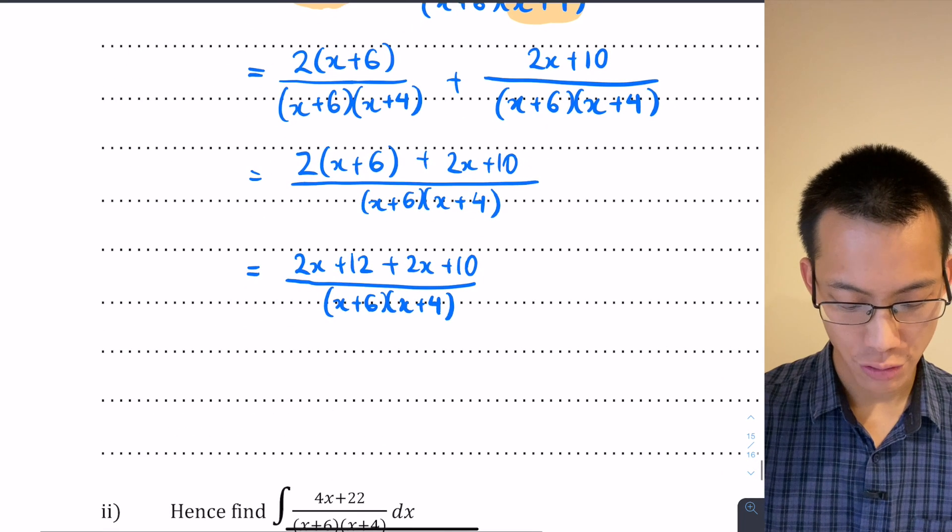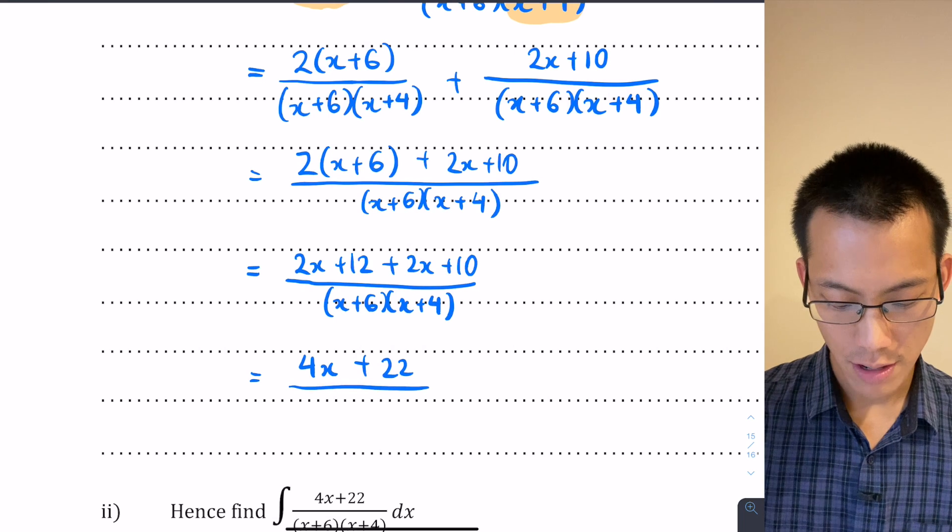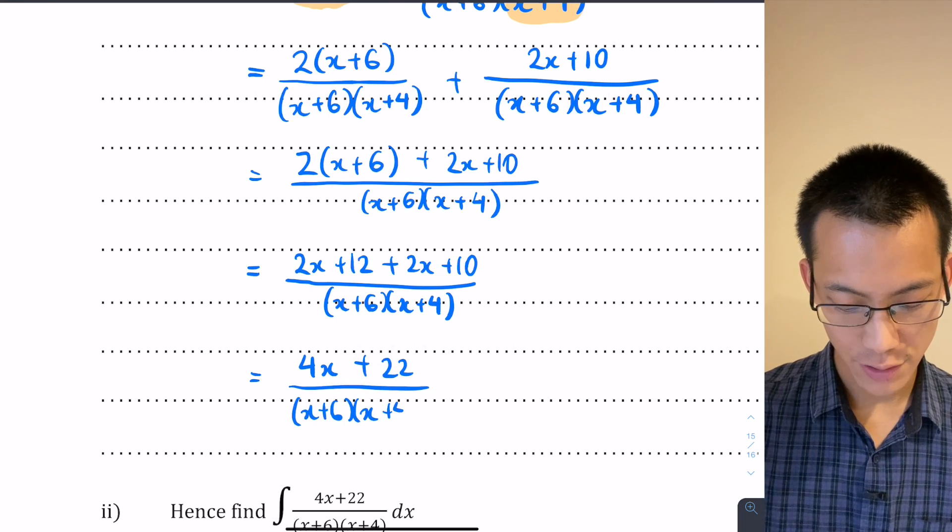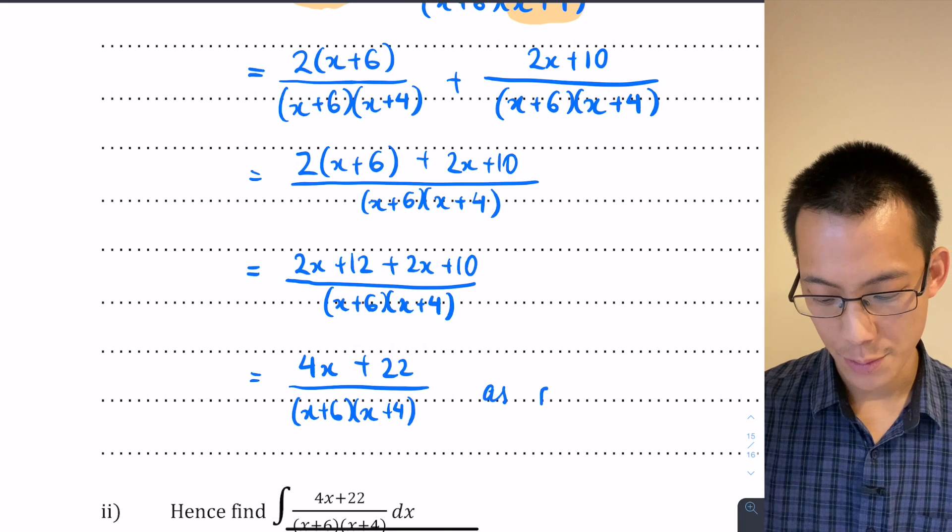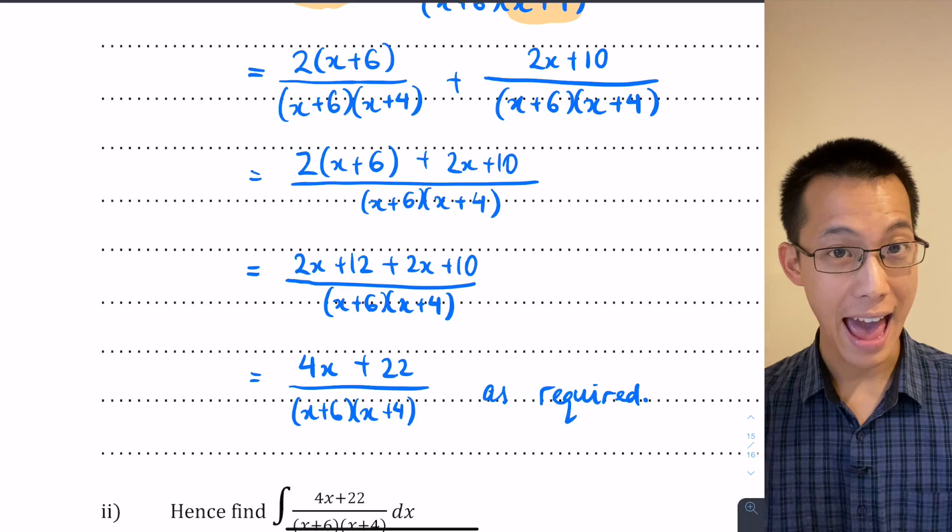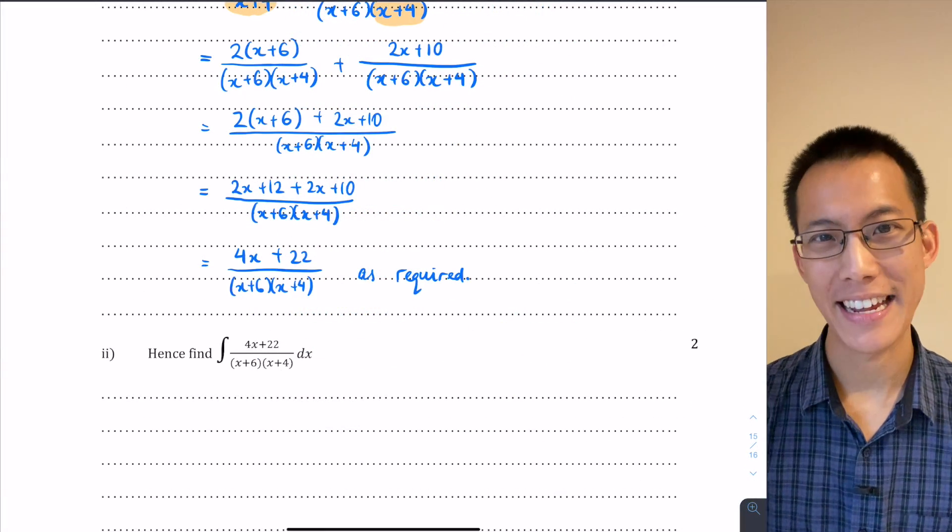You can see the 2x plus 2x gives you 4x, the 12 plus 10 gives you 22, everything is divided by the denominator which hasn't changed for a few lines now, and that's what I was required to find. So I complete my proof by saying "as required."